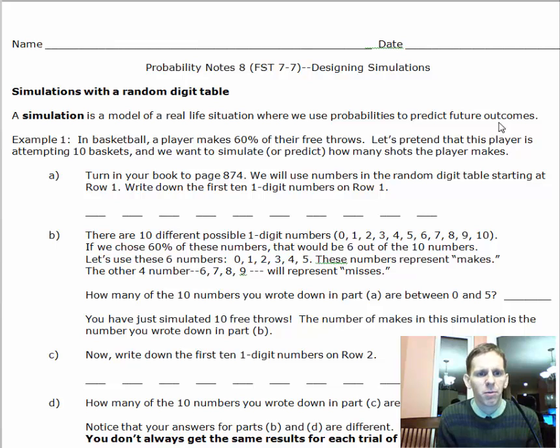We're going to look at two examples today. First is a basketball example. In basketball, let's pick a player that makes 60% of their free throws. Let's pretend that this player is attempting 10 baskets in a game, and we want to simulate or predict how many shots the player makes.